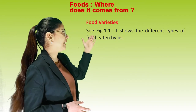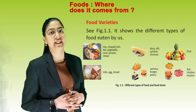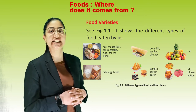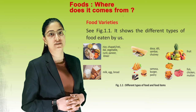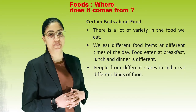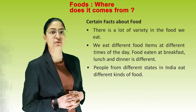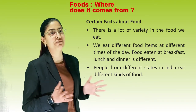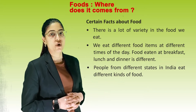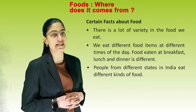Food varieties. See figure 1.1 — it shows the different types of food eaten by us. Certain facts about food: there is a lot of variety in the food we eat. We eat different food items at different times of the day. Food eaten at breakfast, lunch, and dinner is different. People from different states in India eat different kinds of food.